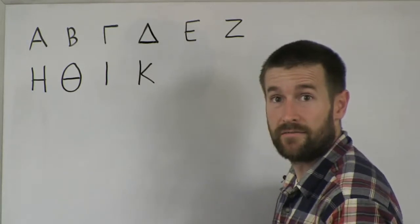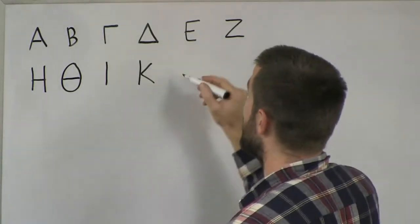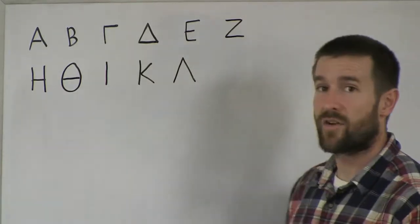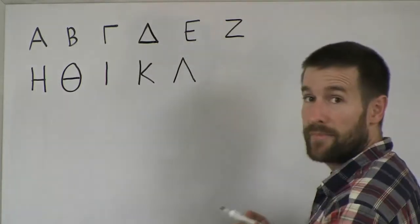Again, those are pretty easy, just like English. Iota, Kappa, Lambda. And Lambda looks like a triangle except it has no bottom. So that's Lambda.